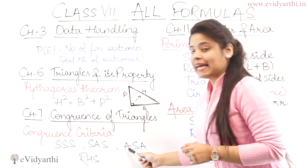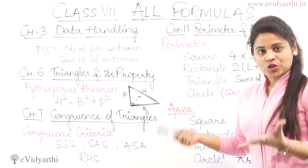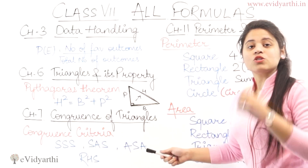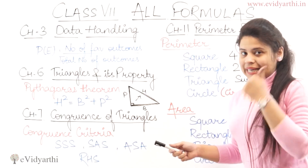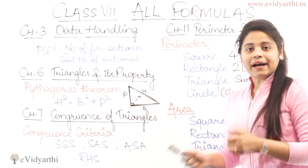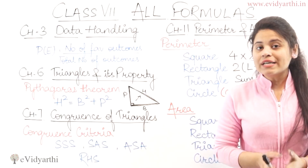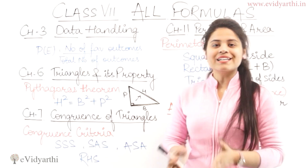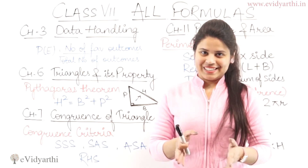Then we have ASA — two angles and one included side. If you have two angles and one included side equal, then the two triangles are congruent.